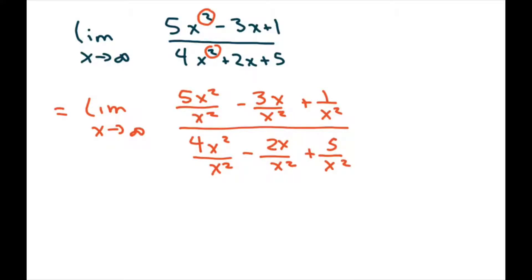And then let's simplify. So we have the limit as x tends to get larger and larger. And this will give us 5 minus 3 divided by x plus 1 over x squared. And then we have 4 plus 2 divided by x plus 5 divided by x squared.